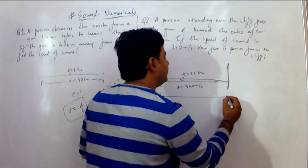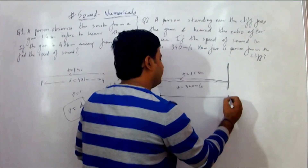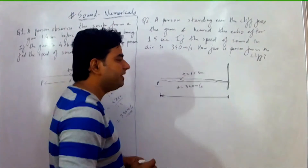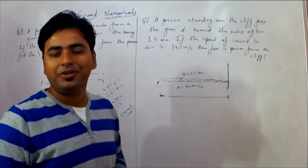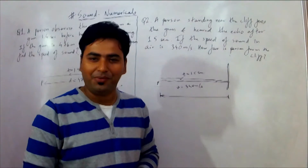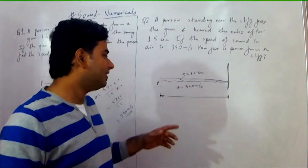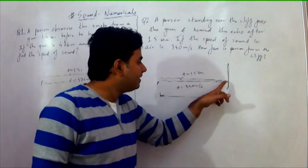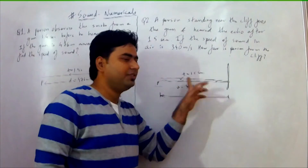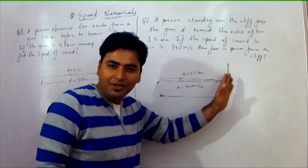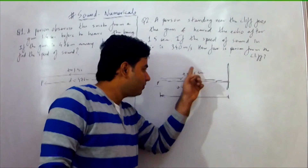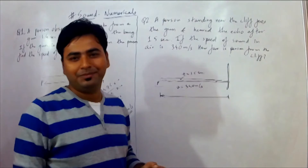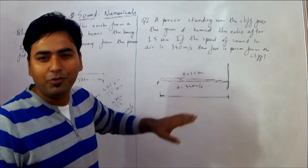So this is the distance we can calculate. But if I directly use distance upon time, what will I get? I will get double the distance. The sound travels to the cliff and comes back. So we have to account for that.